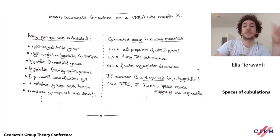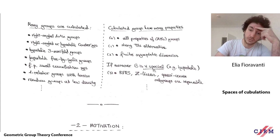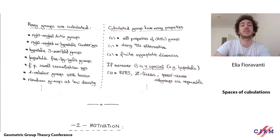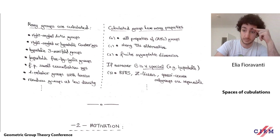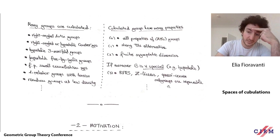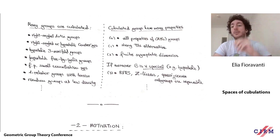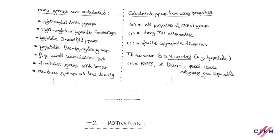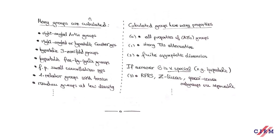The most interesting properties are for groups called virtually special, a notion introduced by Haglund and Wise. A large class of cubulated groups satisfies this. For instance, every hyperbolic group that is cubulated is going to be virtually special by the work of Agol. These virtually special groups have extraordinary properties: they embed in SL(n,Z), they're residually finite, rationally solvable, and all quasi-convex subgroups are separable.